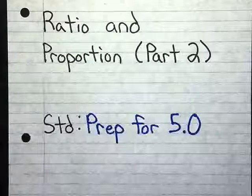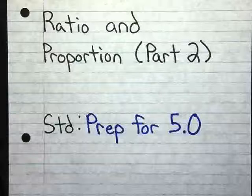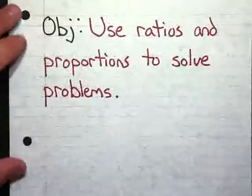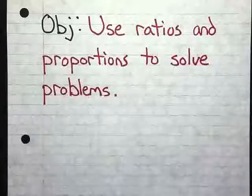This lesson is called Ratio and Proportion Part 2, and we're going to be covering Standard 5. We're actually preparing for this standard. The objective for this lesson is that you're going to be able to use ratios and proportions to solve problems.